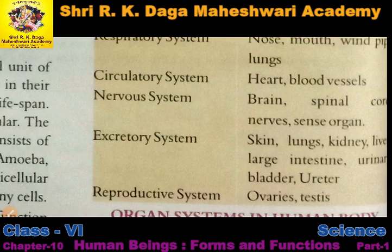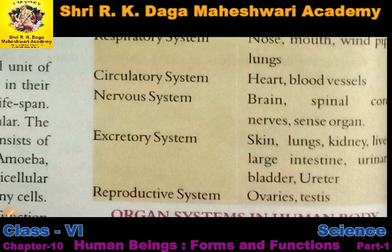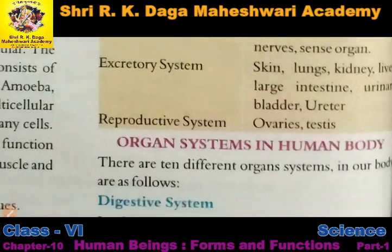The organs in the excretory system are skin, lungs, kidney, liver, large intestine, urinary bladder and uterus. Then if we talk about the reproductive system - all living organisms reproduce, meaning they give birth to their offspring. Male reproductive organs are the testes and female reproductive organs are the ovaries.